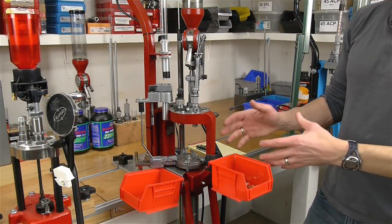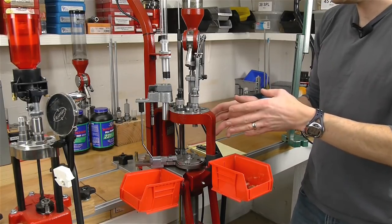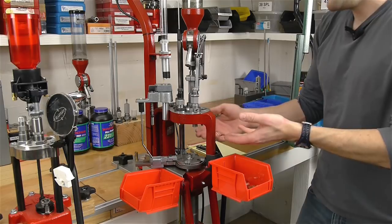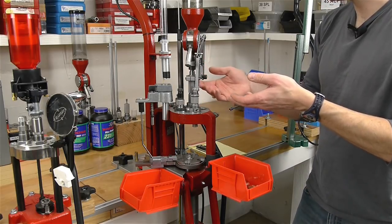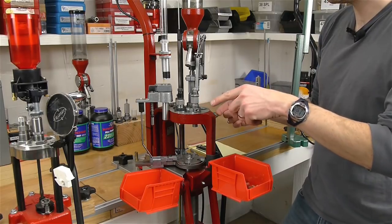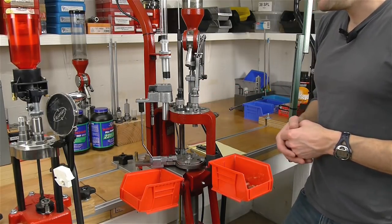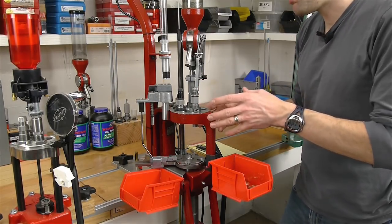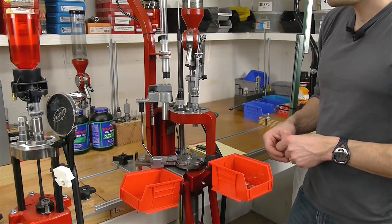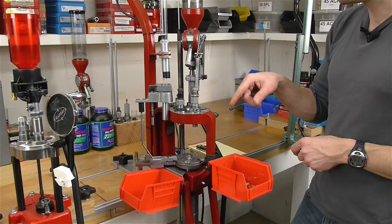So here we have a five station auto-indexing progressive reloading press. The upper half of this press is somewhat similar to a turret in that we've got multiple dies that are set up simultaneously. The big difference between a progressive press and a single-stage or turret press is that we've got multiple die operations going on at a single time each time the handle is pulled.